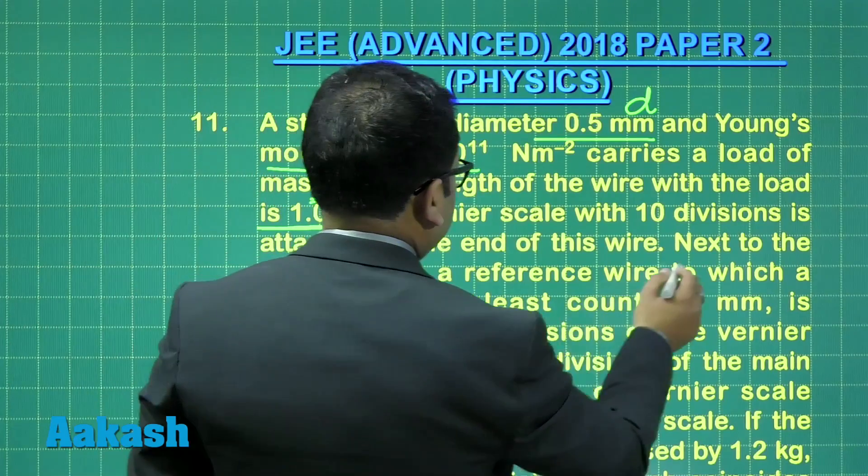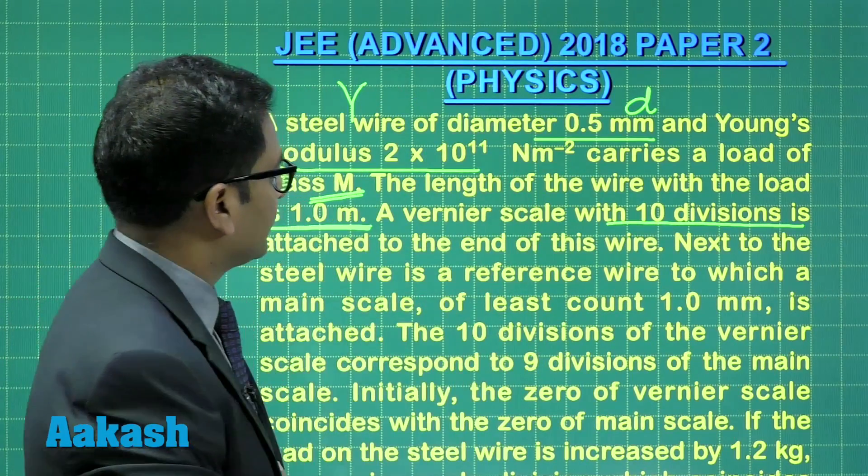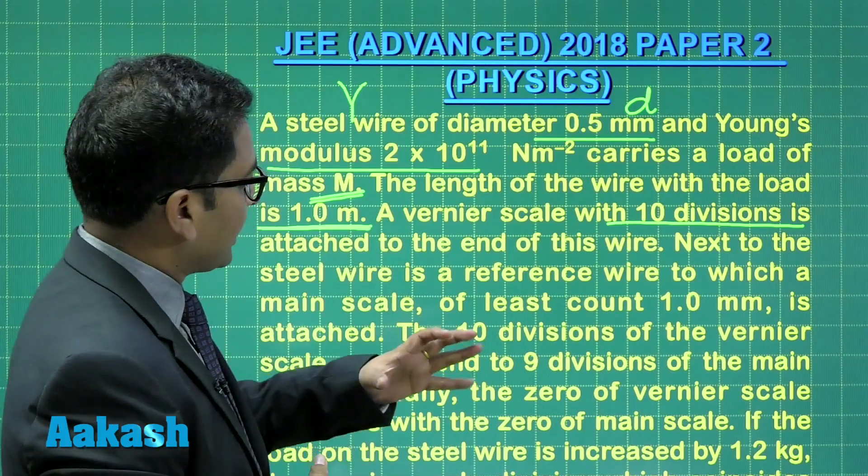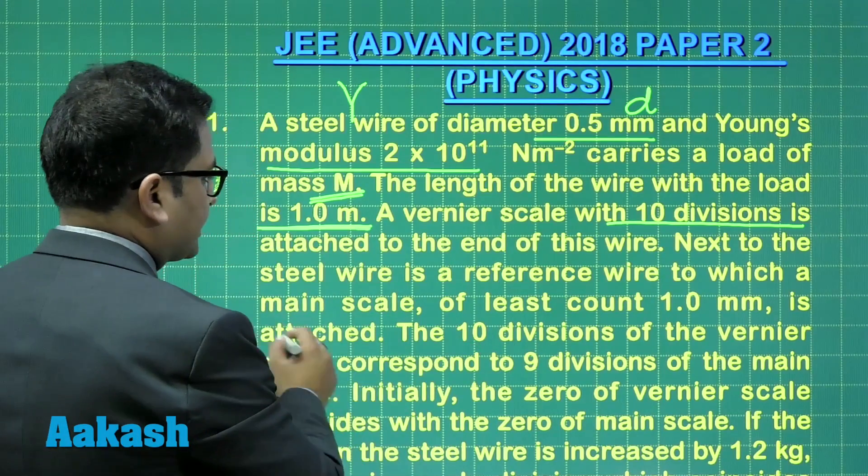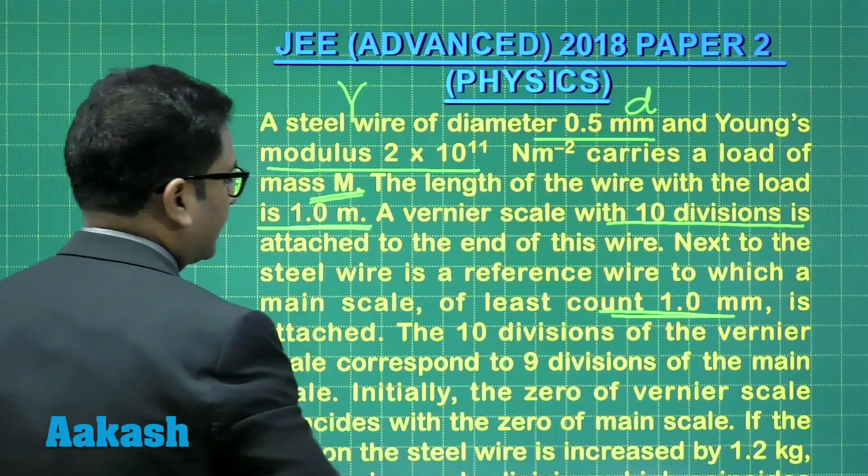A Vernier scale with 10 divisions is attached to the end of this wire. Next to the steel wire is a reference wire to which a main scale of least count 1 millimeter is attached.